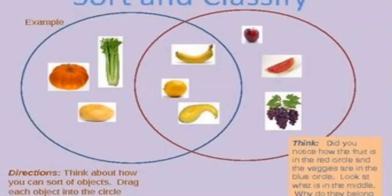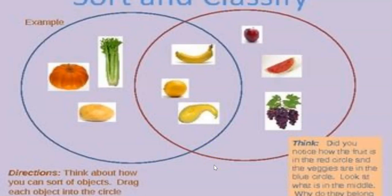Now, this is a little fuzzy, but you can even do this with objects in your home. So for instance, on this example, we have vegetables on one side — we have celery, a pumpkin, and a potato. On this side, we have some fruit: an apple, watermelon, and grapes. But what do we have in the middle? We have yellow vegetables and fruits — so we have a banana, a lemon, and a squash. So you can even do this with objects at home, even things like magnets on your fridge or even types of cereal.